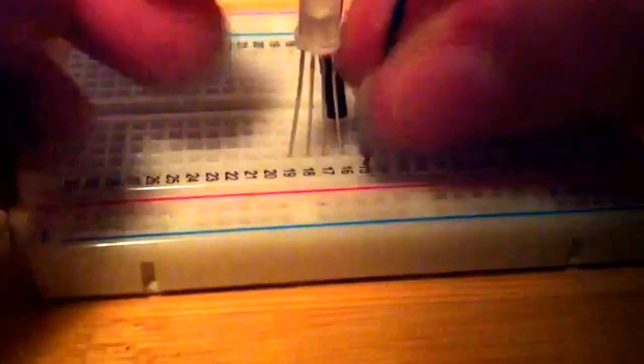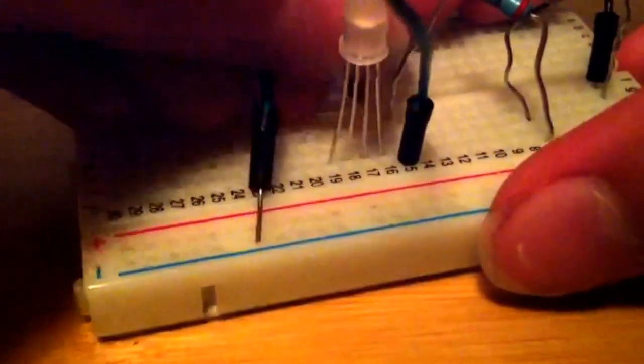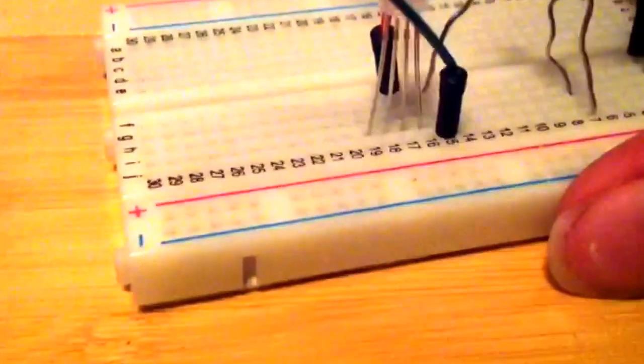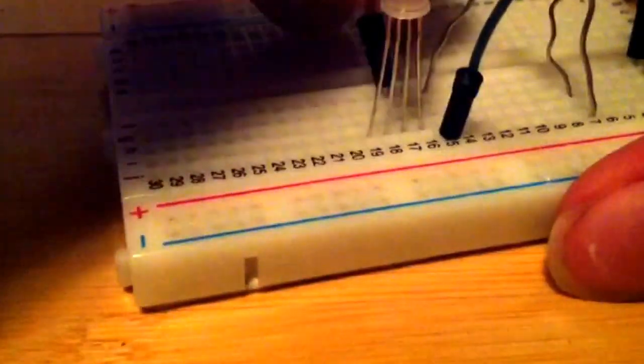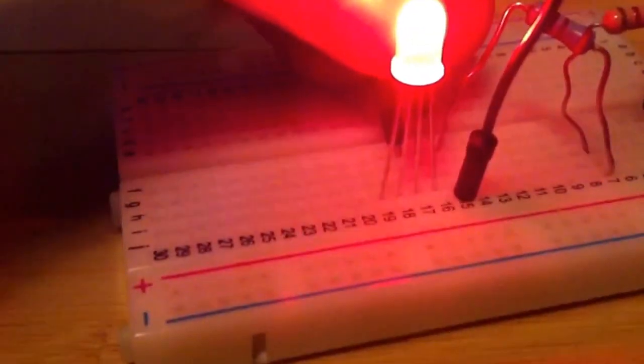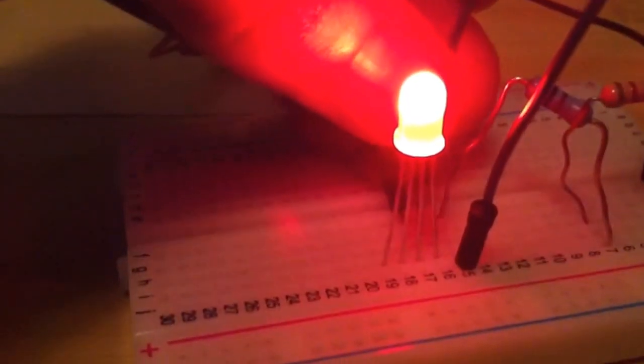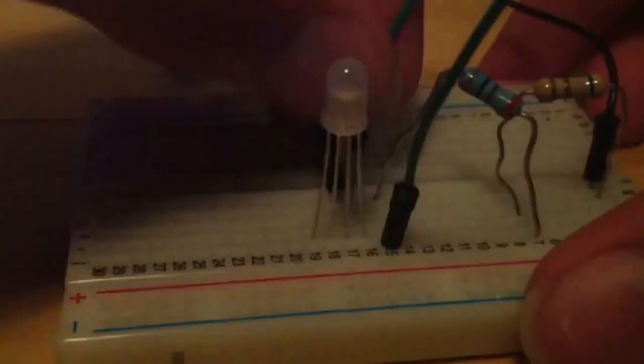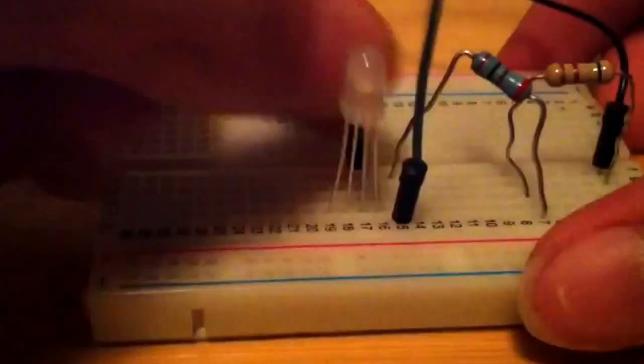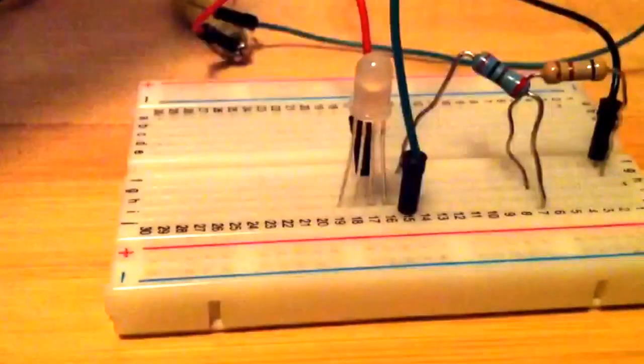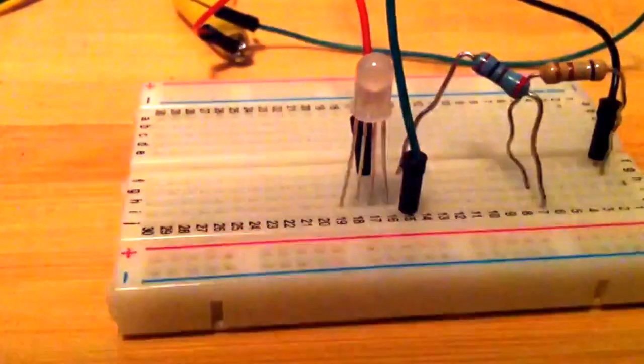Plug that in. So you can do red, let me put the camera at a better angle there. Red, blue, and green, and that's because there are like three little LEDs crammed in.